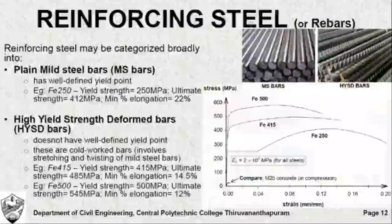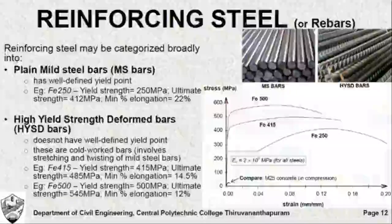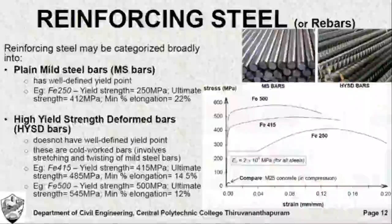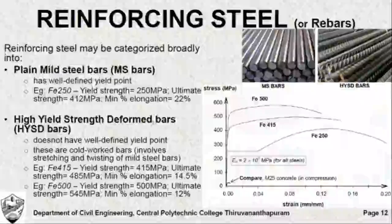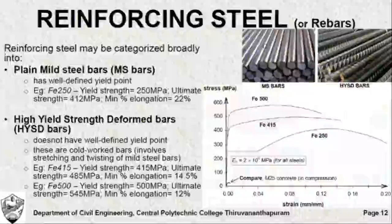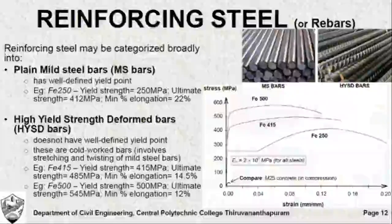Reinforcing steel, or reinforcing bars, or in short rebars, can be classified into two types: plain mild steel bars or MS bars, and HYSD bars or high yield strength deformed bars. Physically they can be distinguished from this figure. The MS bars have a plain surface with no deformations, but the HYSD bars have a deformed surface.